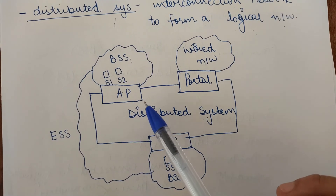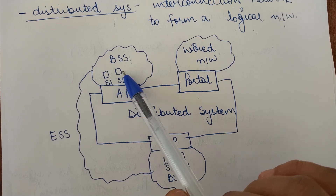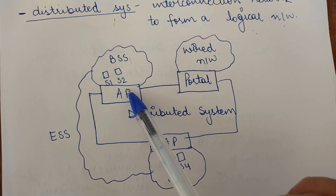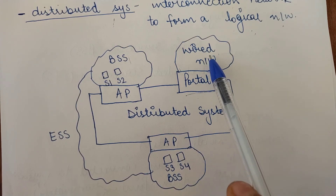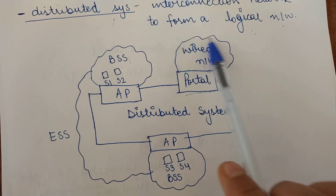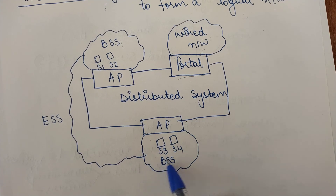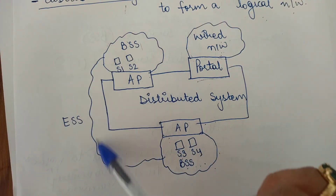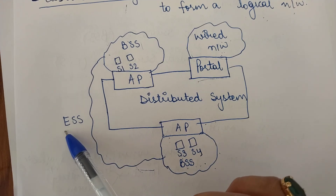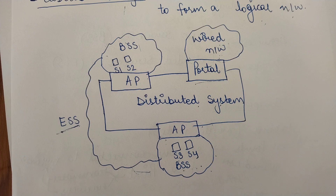Looking at the diagram of a wireless LAN, there are two stations — Station 1 and Station 2 — within the Basic Service Set, meaning within the same radio range, connected to one access point. This access point is connected to a portal, and the portal is connected to the wired LAN. There may be other access points connected to another BSS with Station 3 and Station 4. When these two separate Basic Service Sets are connected through a wireless medium, this is called the Extended Service Set, and the entire setup forms your distributed system. This is the architecture of a wireless LAN.